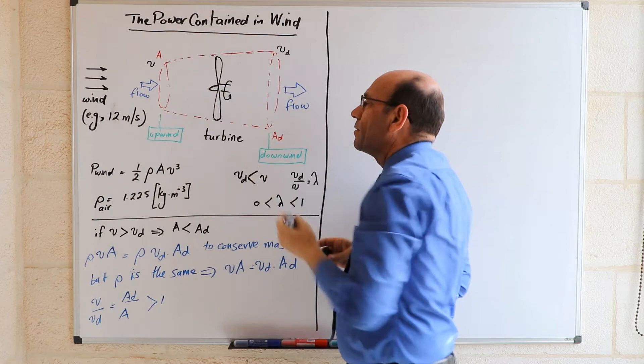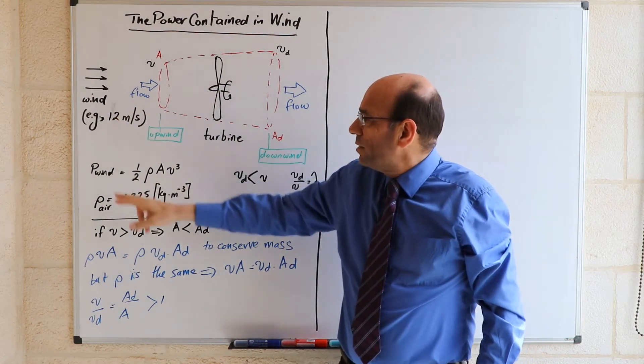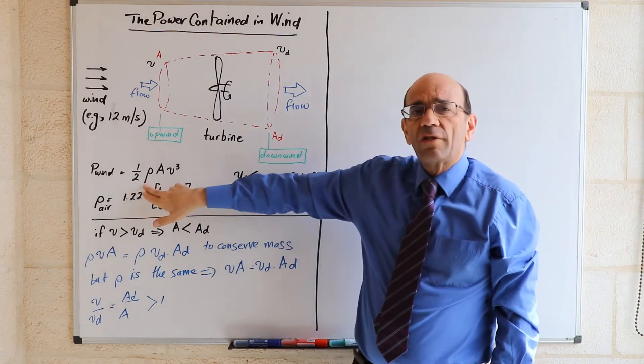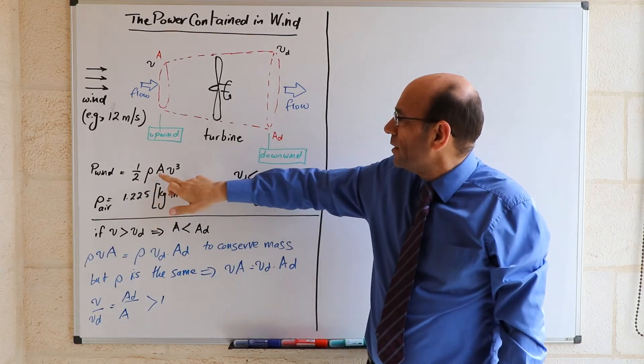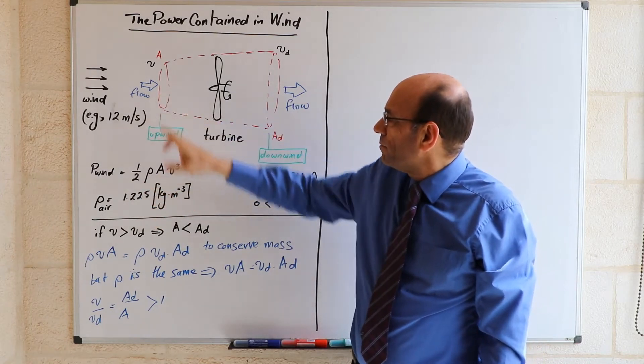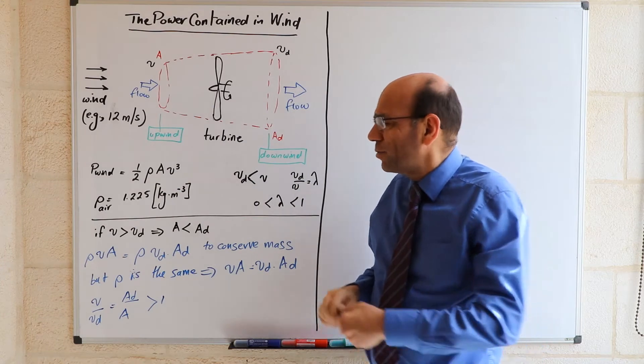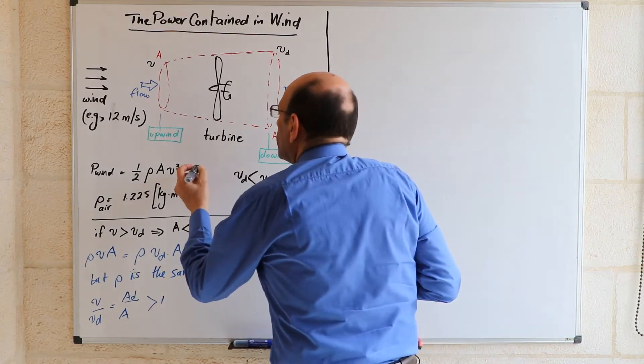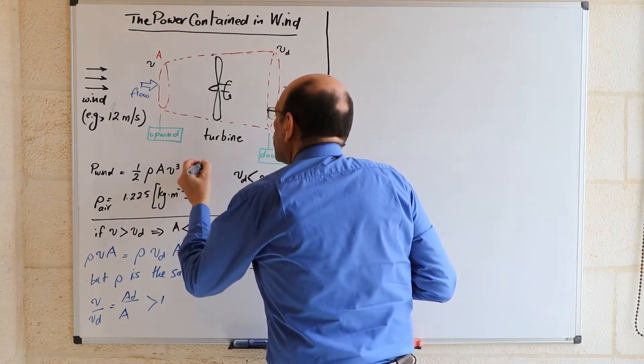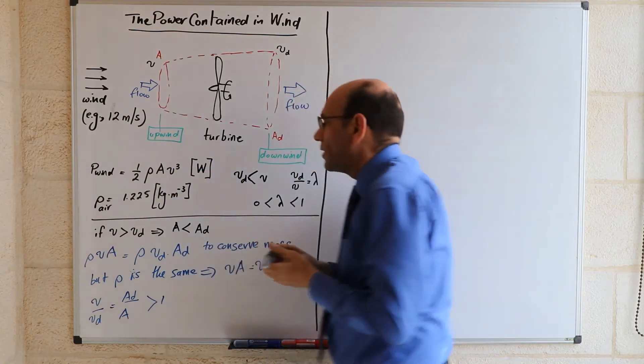The power present in the wind is proportional to the density of the air, it's proportional to the area, and it's proportional to the cube of the speed. And that will give us power in units of watts.